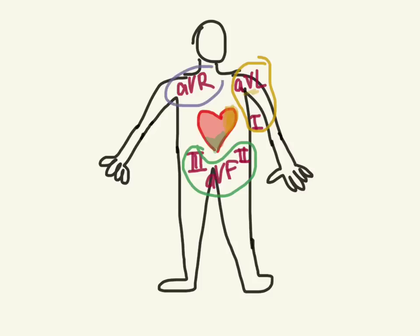And AVR is up here, looking at kind of like the right side of the heart, maybe the top, but mostly the right side over there. But what about those other leads, the precordial ones, V1, V2, V3, V4, V5, and V6? What do they look at?